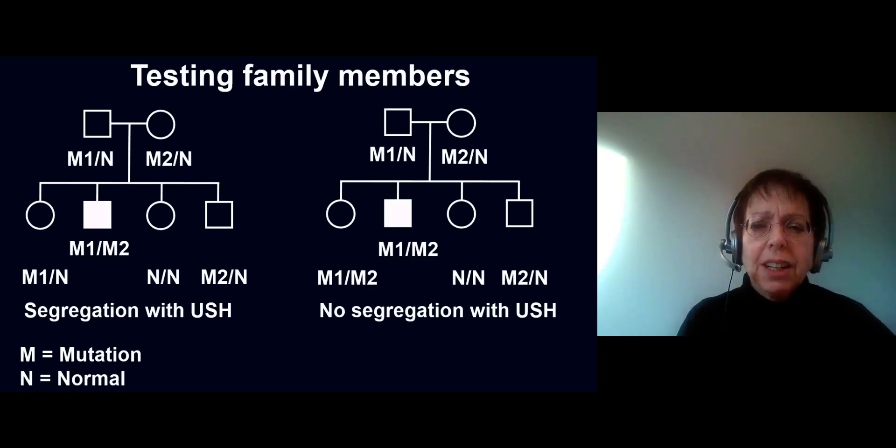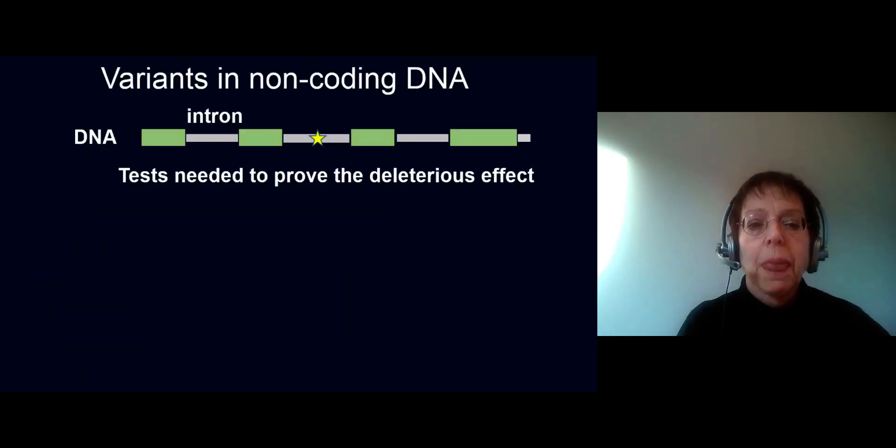Tests are needed then to prove whether a change found in a family and rare or not present in the general population really is deleterious for the function of the USH2A gene. So what could such a change in an intron do? As we have seen, the pre-mRNA contains both exons and introns, and splicing has to occur in a very exact way.